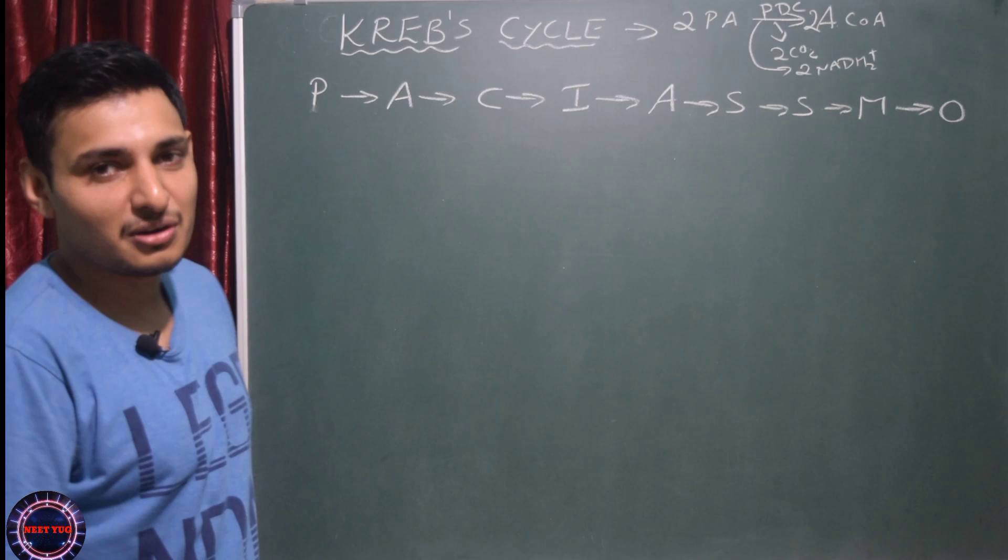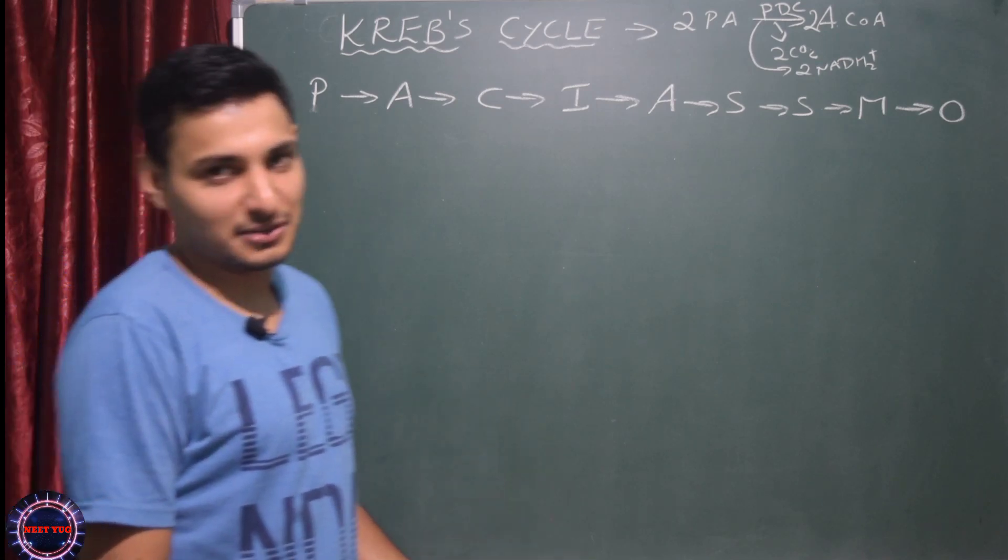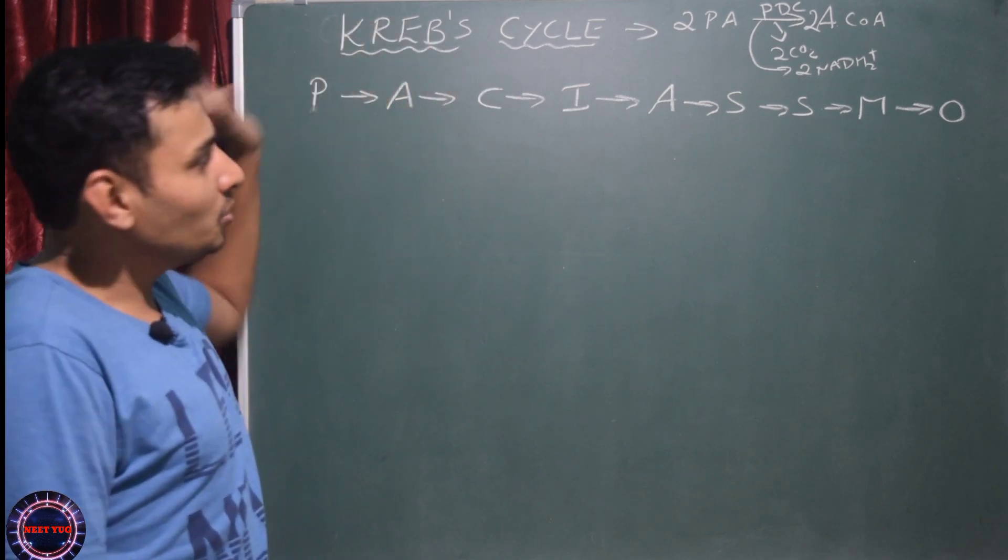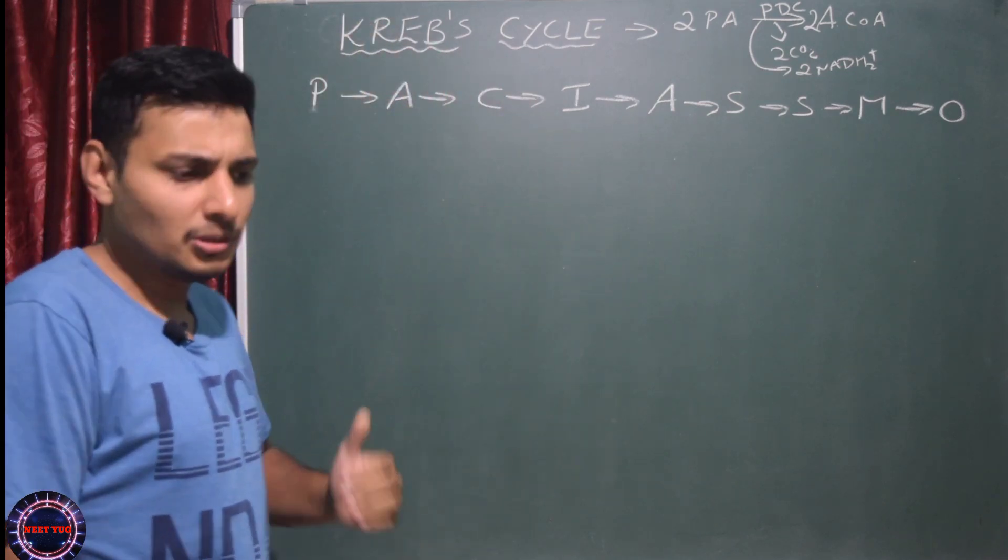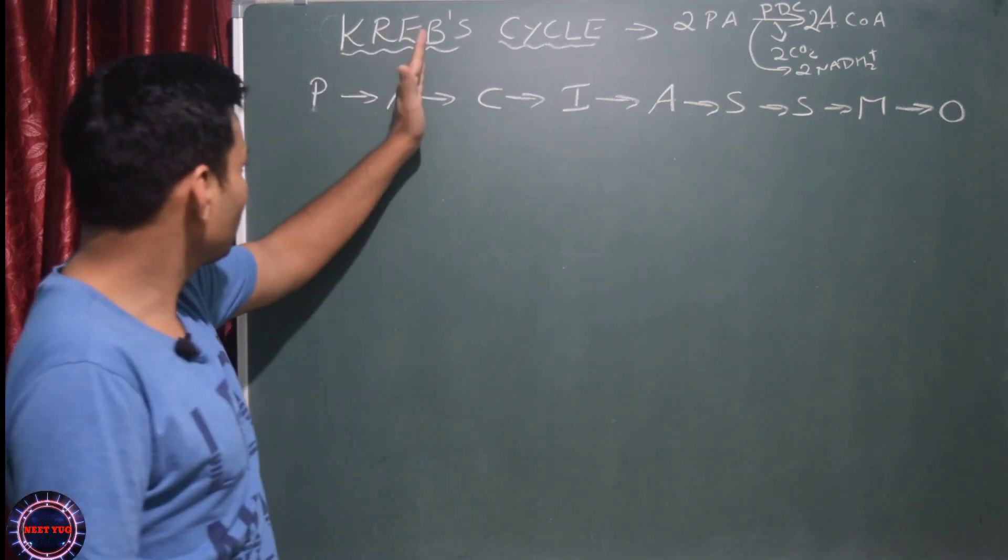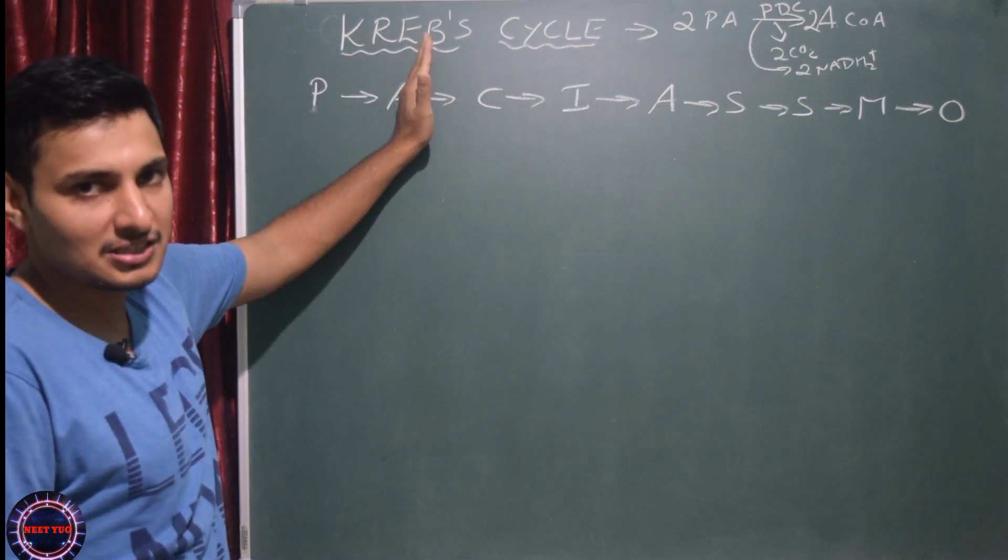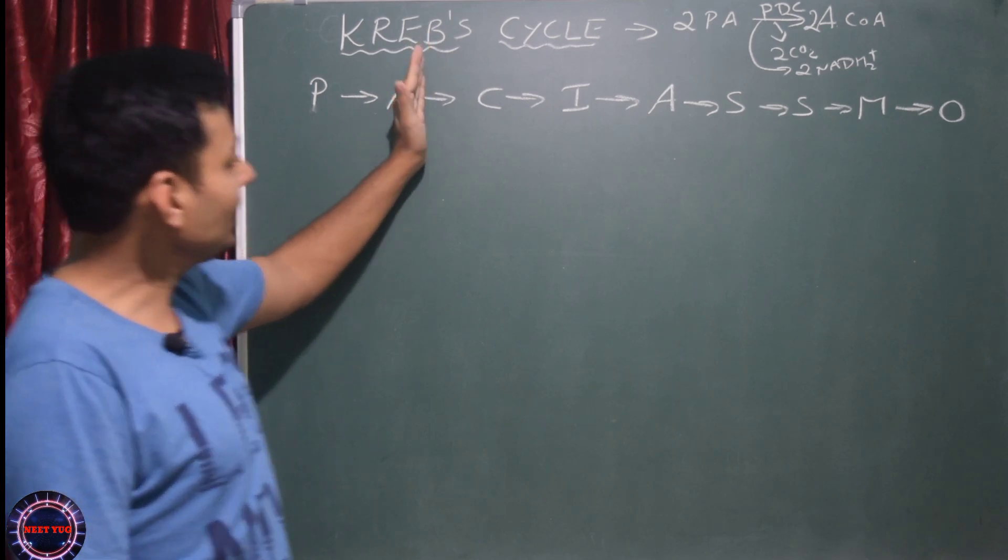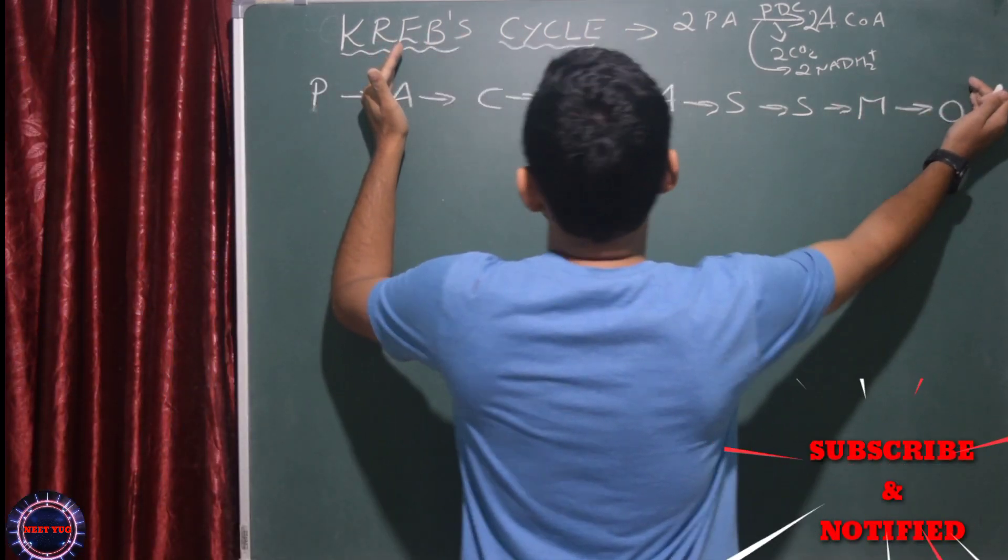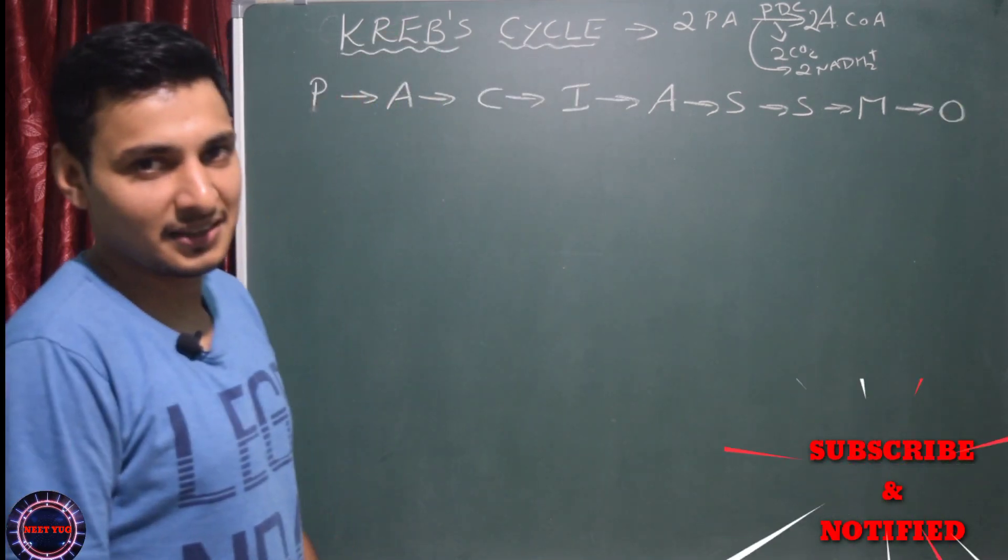That's stored in ETS - electron transport system - in the inner membrane of the mitochondria. This is aerobic respiration. Step 1: pyruvic acid to acetyl coenzyme A - that's the first step of aerobic respiration. Then Krebs cycle actually starts.